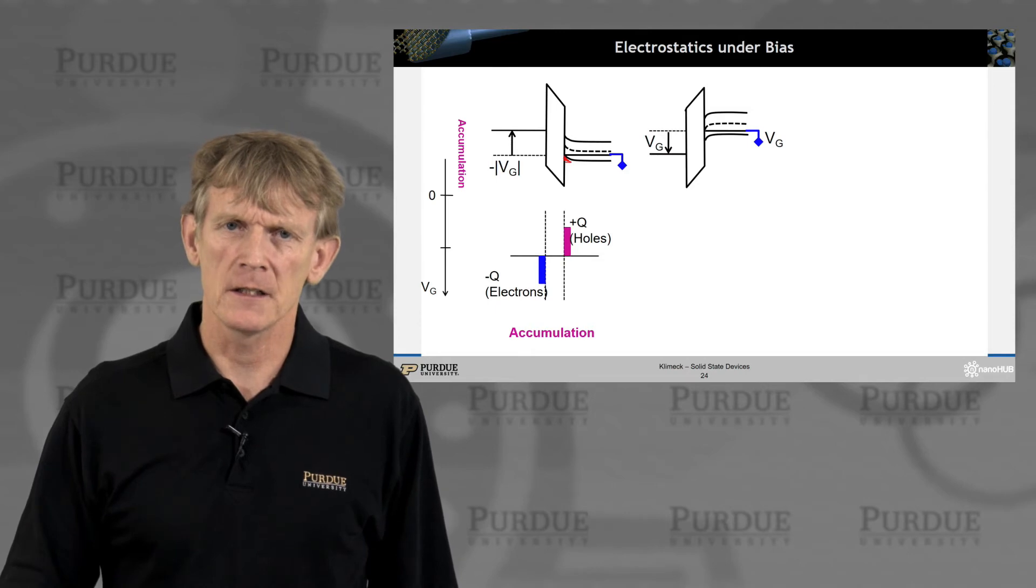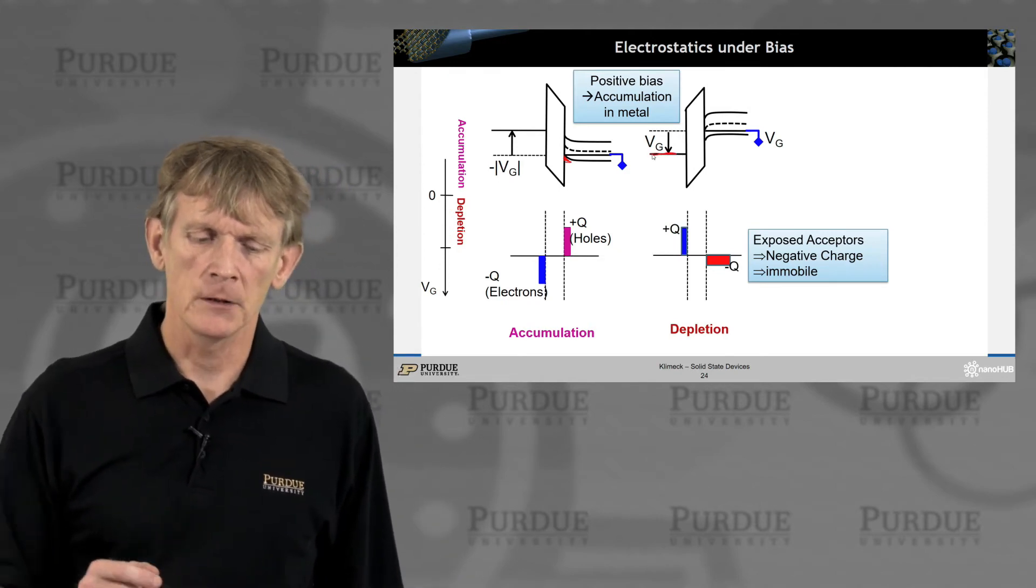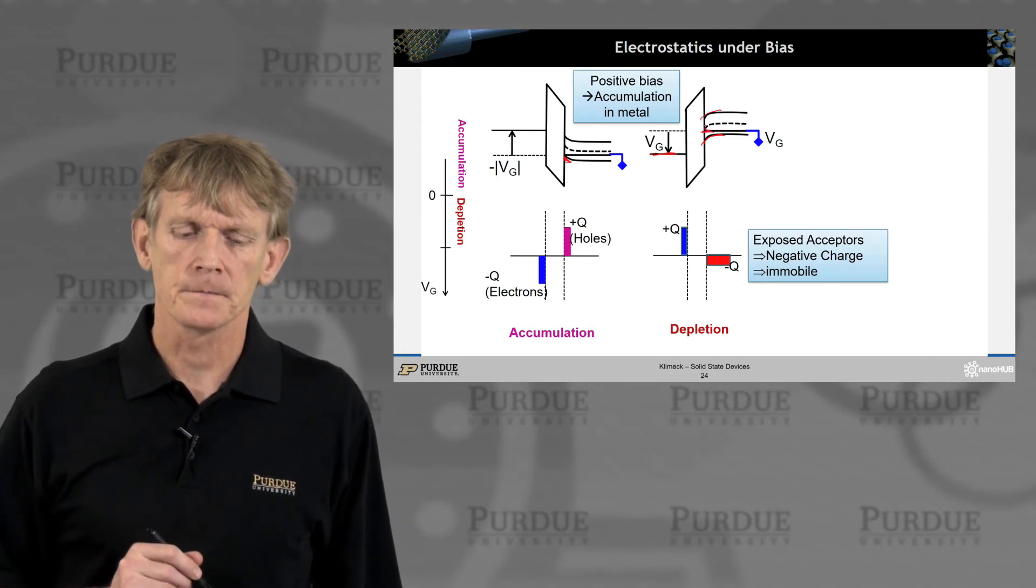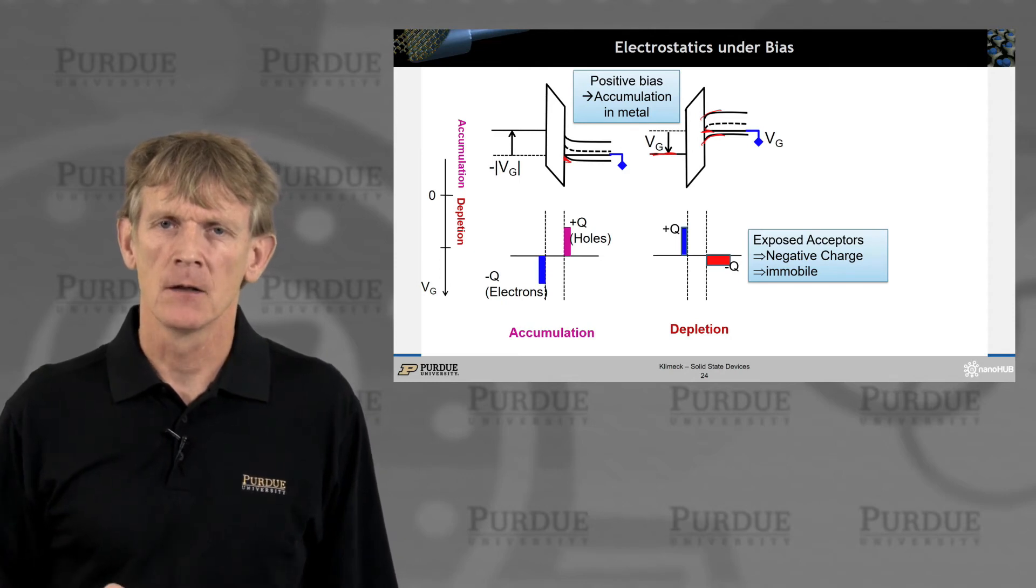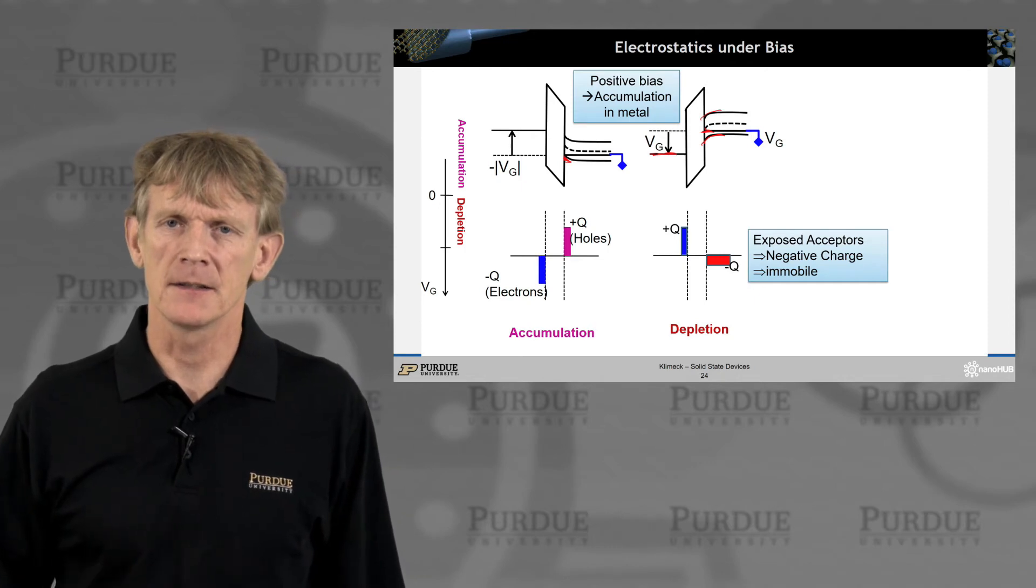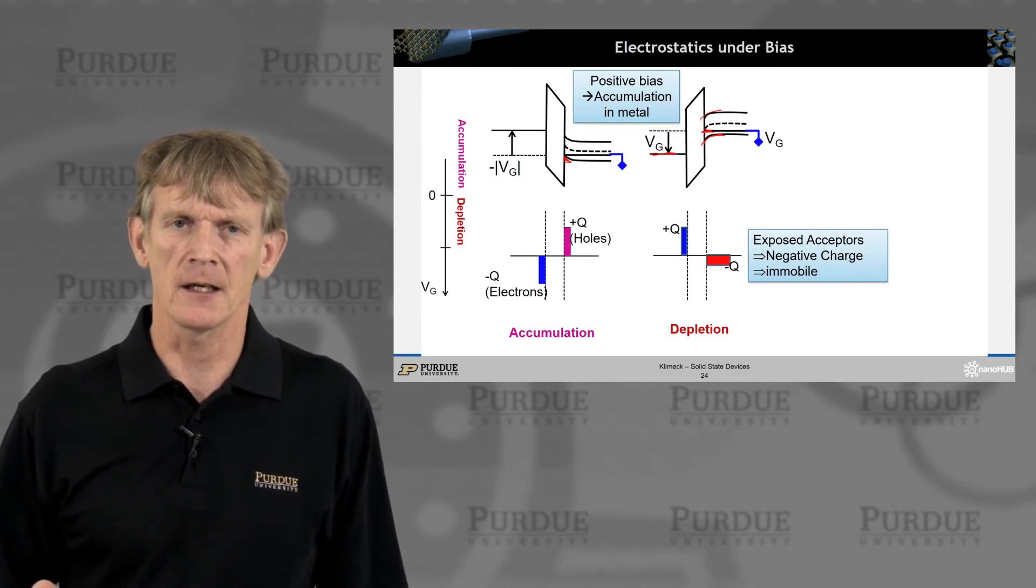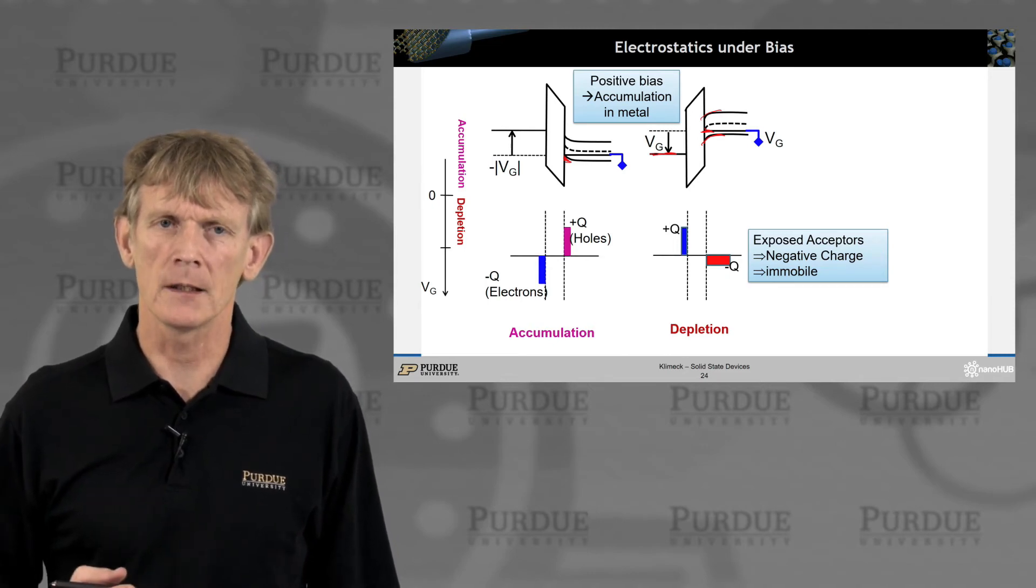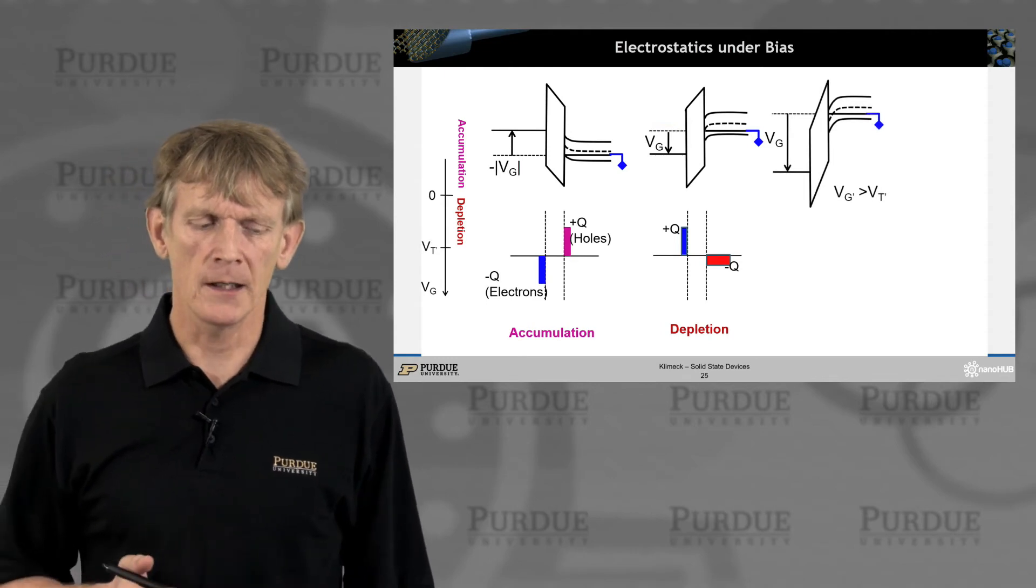Now let's apply voltage in the other direction. So we apply the voltage pulling down this potential. Then we will begin to bend the bands here, and that means we're pushing the Fermi level away from the valence band edge. We're depleting this region, just like in a sense what we had with a PN junction, where we have now exposed acceptors, which build a negative charge, and they're not mobile. So just like what we had in a PN diode, we have a depletion region, where we're pushing out free carriers and expose the acceptors in this case. And they are immobile, they don't move, and we basically push the holes that normally would cover them away from the interface. So this is called depletion.